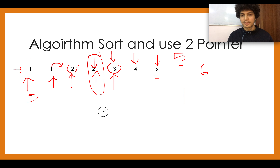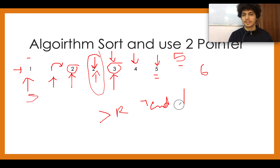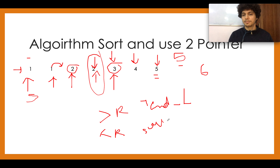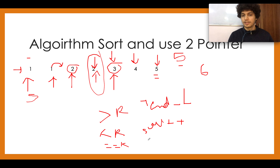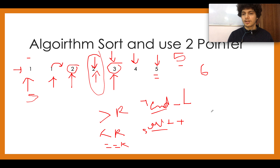To summarize the two-pointer logic: if the sum is greater than k, reduce the end pointer (end--). If the sum is less than k, increase the start pointer (start++). If the sum equals k, consume both indexes (end--, start++) and increment the answer count.